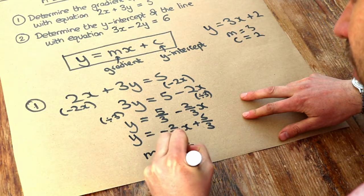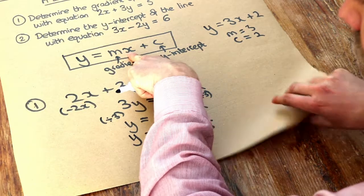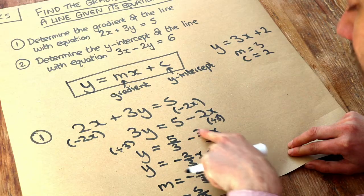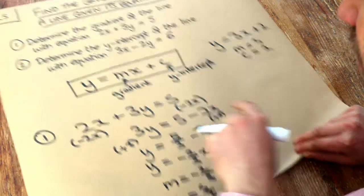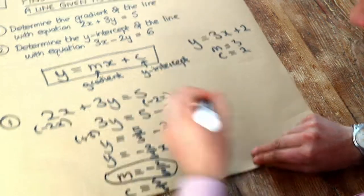It doesn't matter if we used this equation above. Even though the x term is not first like it is here, we can still read off the number in front of the x to get the gradient. So the gradient is minus 2 thirds, and this term without the x is the y-intercept, 5 thirds. The gradient is minus 2 thirds. That's the final answer.